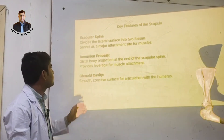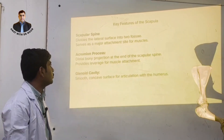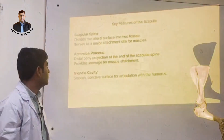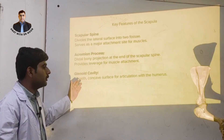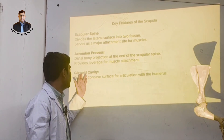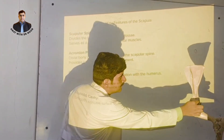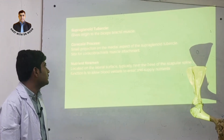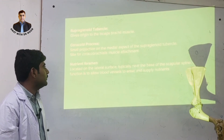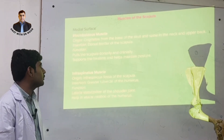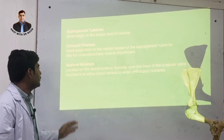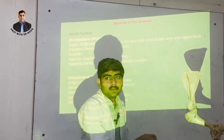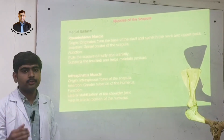Key features of the scapula: the scapular spine divides the lateral surface into two fossae and serves as a major muscle attachment site. The acromion process is at the end of the scapular spine. The glenoid cavity articulates with the humerus. The supraglenoid tubercle gives origin to the biceps brachii muscle. The coracoid process is a small projection on the medial aspect of the supraglenoid tubercle and serves as the site for the coracobrachialis muscle. The nutrient foramen allows blood vessels and nutrients to enter the bone.